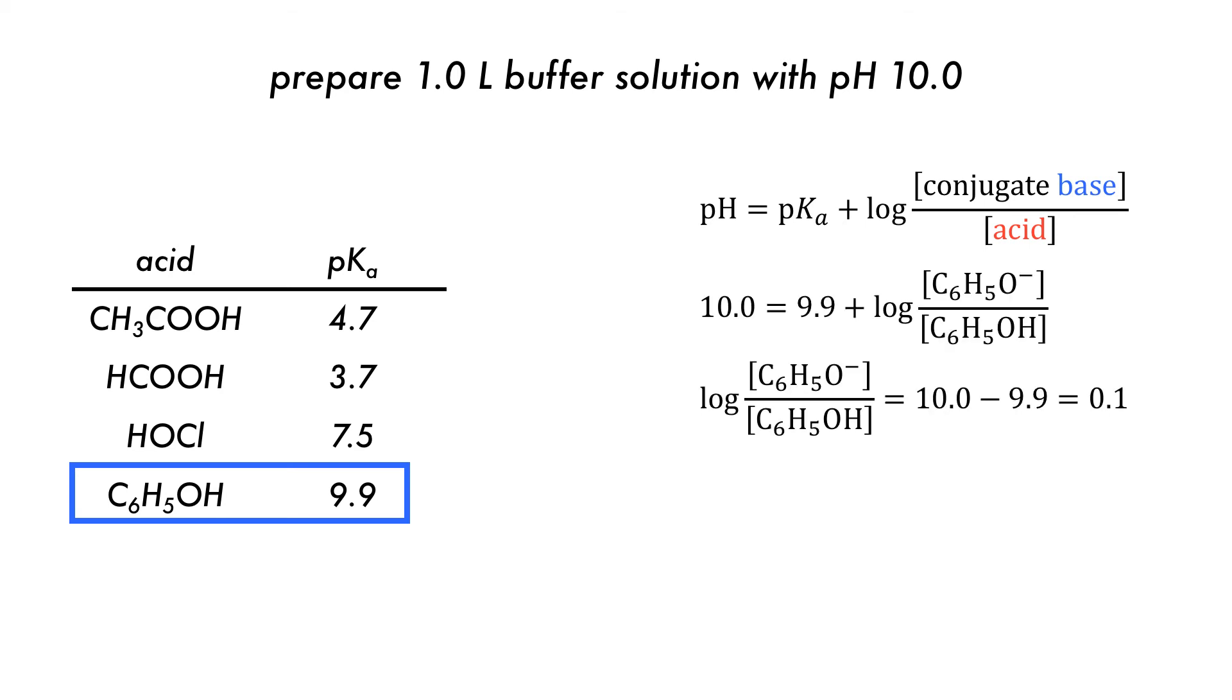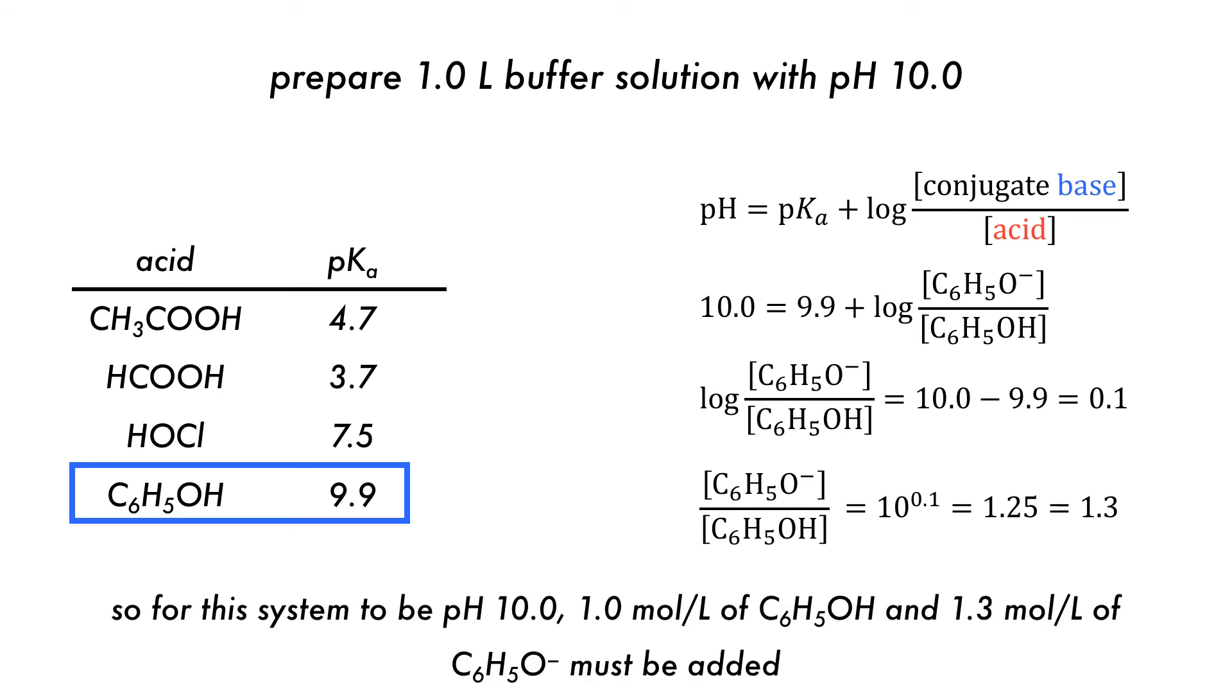Filling in the values, we can rearrange the equation to obtain the ratio between the concentrations of the conjugate base and weak acid as 1.25. This means that to produce a buffer solution with pH 10, we must add 1 mole per liter of phenol and 1.25 moles per liter of phenolate salt to pure water.